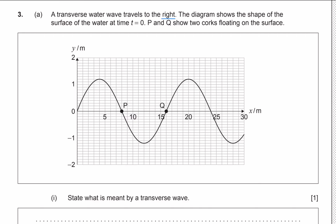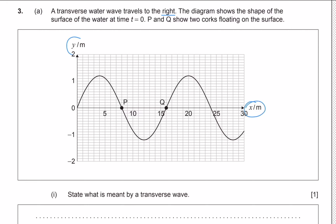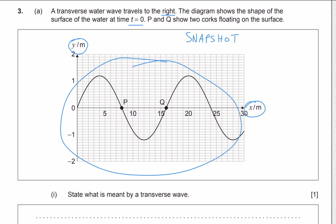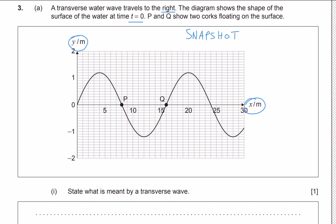P and Q show two particles floating on the surface. Let's think about what kind of graph we were given. We see that the x-axis units are displacement and the y-axis units are also displacement, and we're told this is at t equals 0. When given a graph like this of a transverse wave, we can think of it as a snapshot — imagine the water waves going up and down, and at one moment we take a picture. That picture is what we see here as a sine graph on axes.